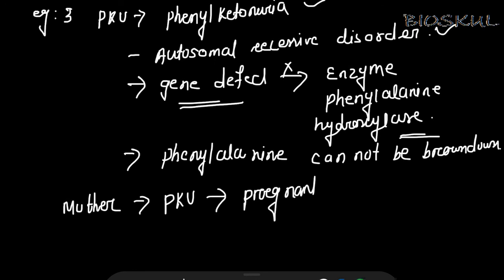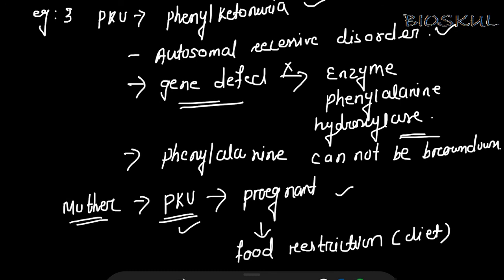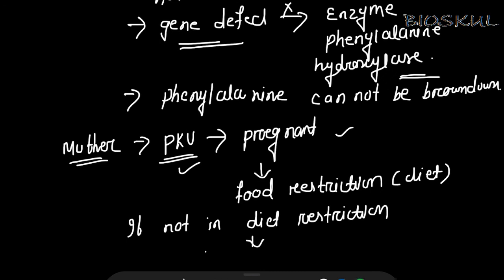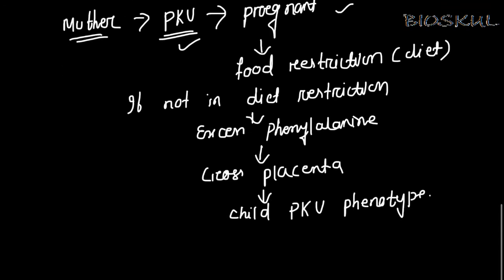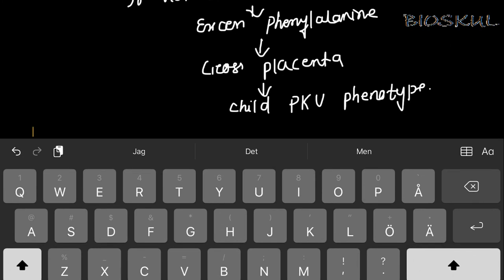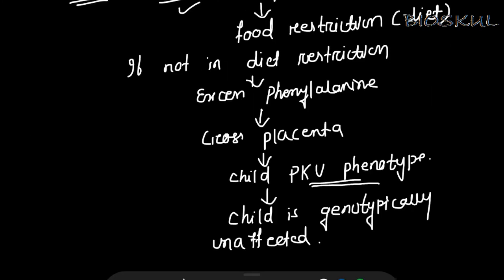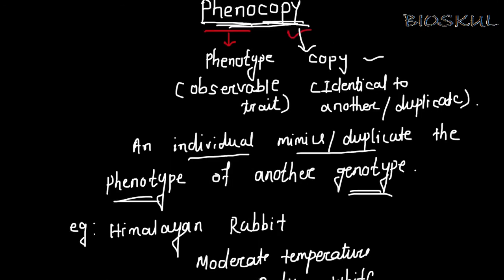If a mother is suffering from phenylketonuria and is pregnant, she should be on food restriction and not take phenylalanine in her diet. If not, excess phenylalanine will cross the placenta and give the child a phenylketonuria phenotype, even though the child is genetically unaffected. So the child with the PKU phenotype mimics the phenotype of another genotype. This is all about phenocopy.